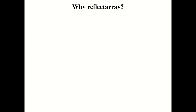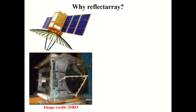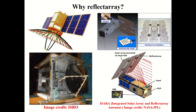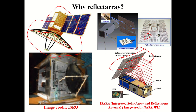Why use a reflectarray? A parabolic reflector occupies huge space. A reflectarray is compact — suitable for CubeSats where space is limited. A CubeSat launched by NASA integrated a reflectarray with solar panels on the back side on the same platform. They also used hinges between reflectarray panels, enabling a reliable folding mechanism to fold the array along the satellite module surface.